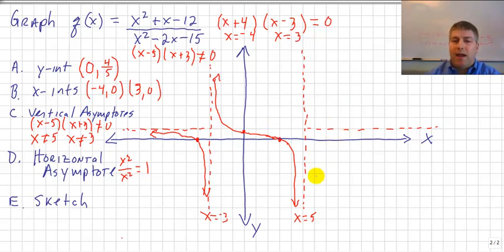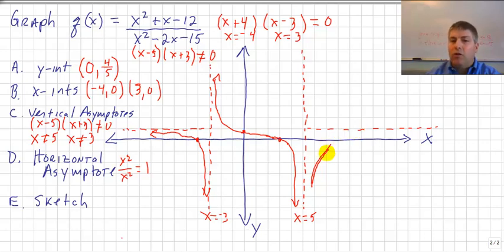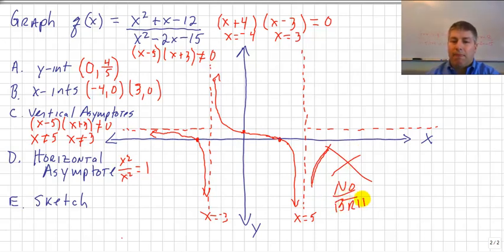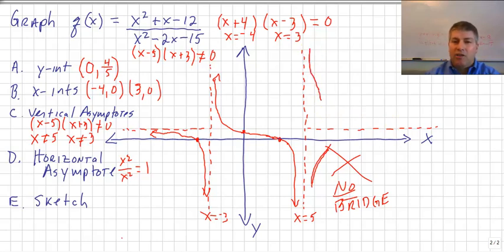For the final region on the far right, to the right of x equals 5, I need to graph something. You might think to graph below the asymptote, but there's no x-intercept here — no bridge to cross the x-axis. Since I can't get across the x-axis in this region, I must graph above the horizontal asymptote. Using asymptotic behavior, the graph approaches x equals 5 from the right and heads upward, then curves back approaching y equals 1 as x gets very large.